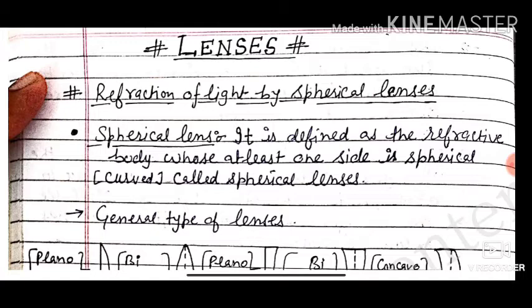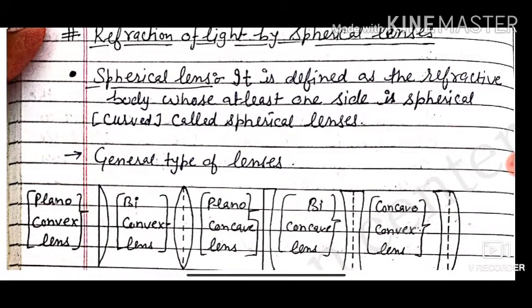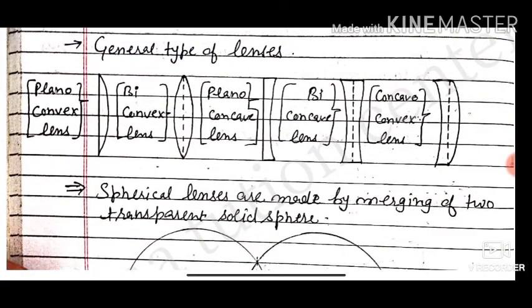First is refraction of light by the spherical lenses. A spherical lens is defined as a refractive body whose at least one side is spherical or curved. The other side can also be curved — at least one side must be curved. General types of lenses include bifocal lenses and biconcave lenses.